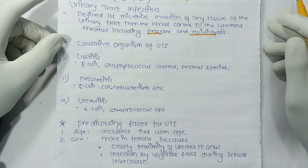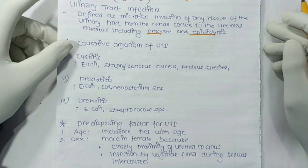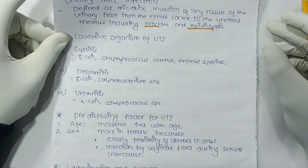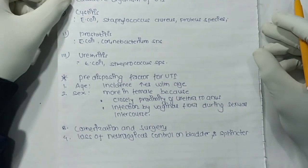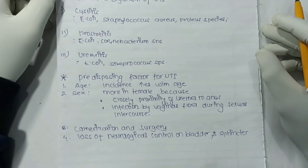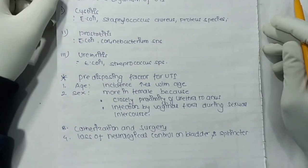Now, causative organisms of UTI: Cystitis is caused by E. coli, Staphylococcus aureus, and Proteus species. Prostatitis is caused by E. coli and Corynebacterium species. Urethritis is caused by E. coli and Staphylococcus species.